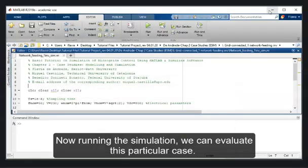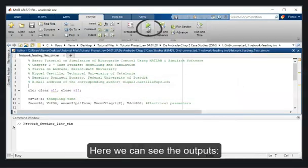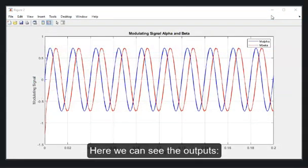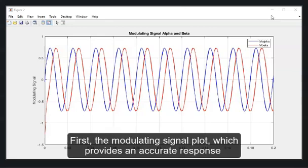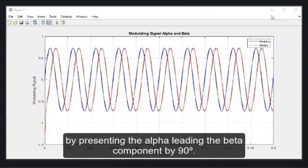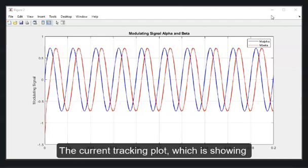Now, running the simulation, we can evaluate this particular case. Here, we can see the outputs. First, the modulating signal plot, which provides an accurate response by presenting the alpha leading the beta component by 90 degrees.